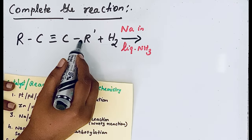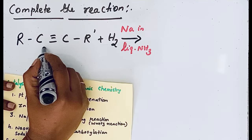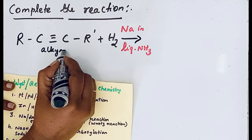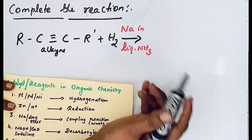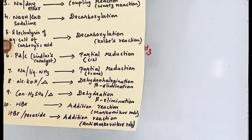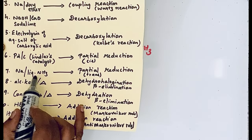Let's see our question: C triple bond C. This is an alkyne because there is a triple bond with hydrogen in the presence of sodium in liquid ammonia.